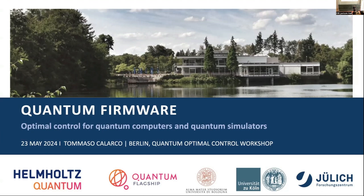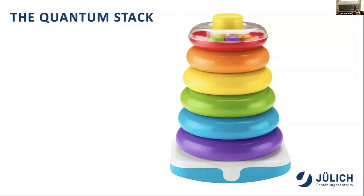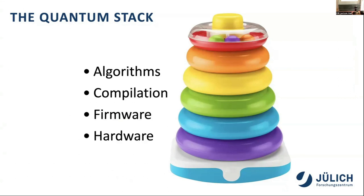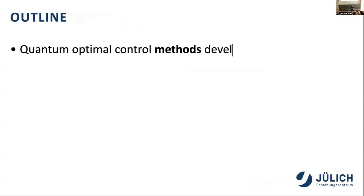I will structure this by telling the story of how we can create the different components of a quantum stack. A quantum stack for a quantum computer starts above with algorithms, and below you have to compile those algorithms into a gate, then you have to make those gates. This is where we come in with the quantum optimal control aspect, which connects to hardware — the lower part of the stack where my research is focused.